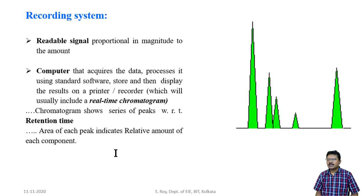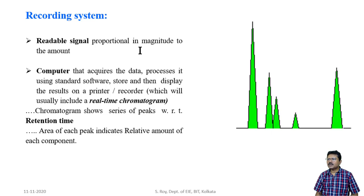After the detector, the detecting signal is passed to the recorder or computer system to get the display as an indication. The recording system provides a readable signal proportional in magnitude to the amount of components. The recording system may include a computer that acquires the data, processes it using standard software, stores the data, and displays the result — including the real-time chromatogram. This chromatogram consists of different peaks with respect to retention time.